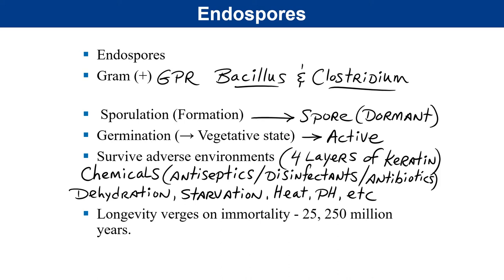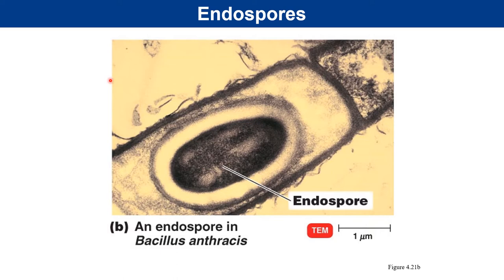A high-resolution electron microscope photograph of Bacillus anthracis, the causative agent of anthrax, shows one large rod-shaped cell with a central endospore — including the dark spot in the center and the surrounding layers of keratin. This is the hardest to kill life form we've ever observed and is the gold standard for sterilization: if you can kill an endospore, you can sterilize.